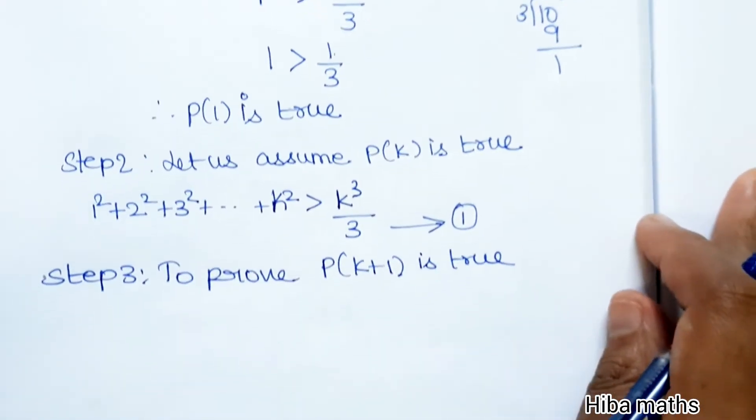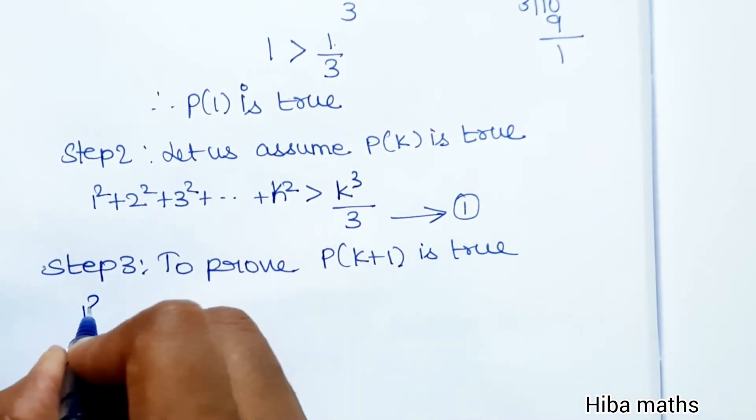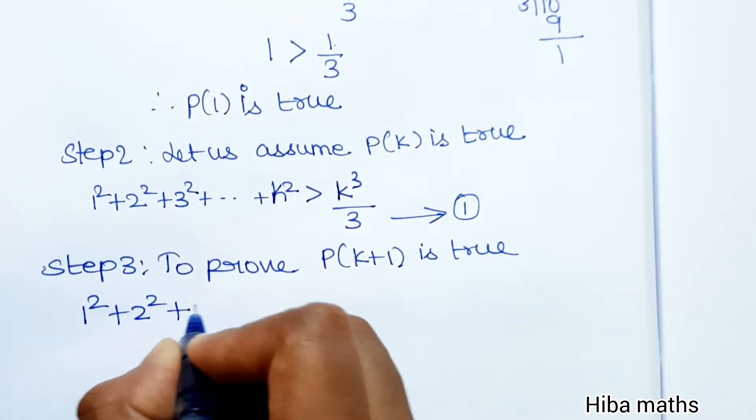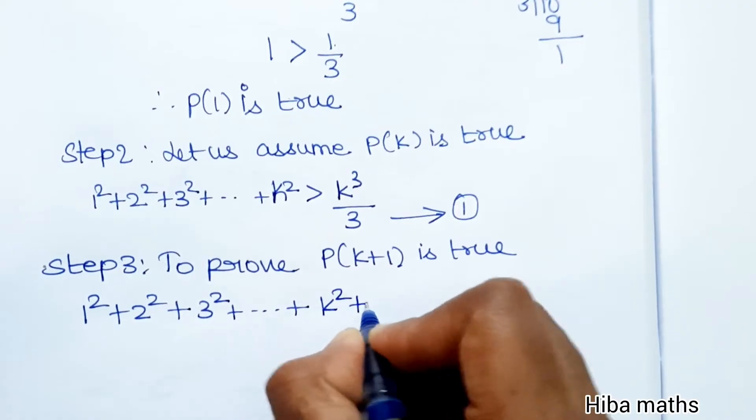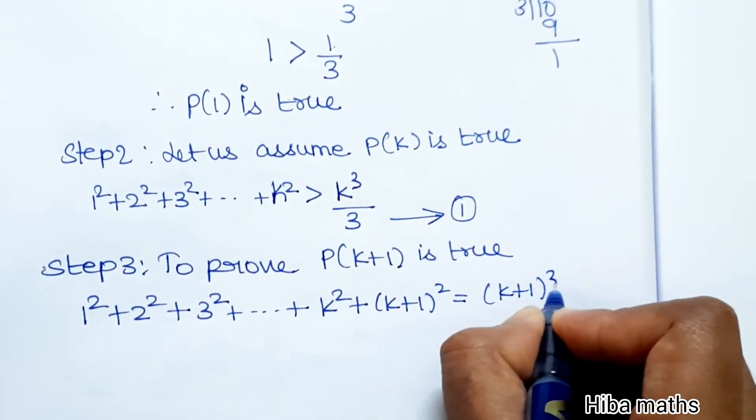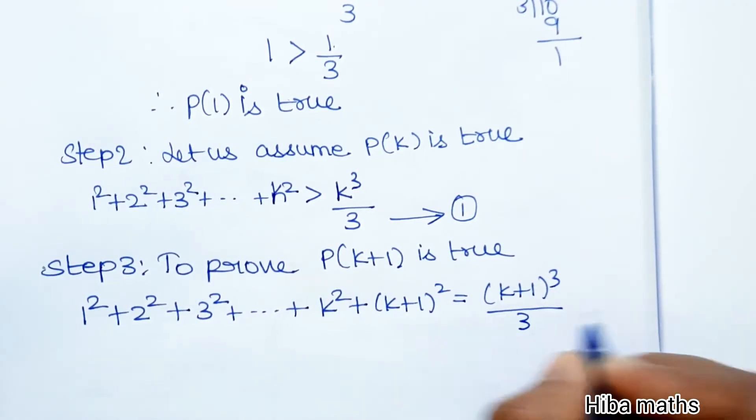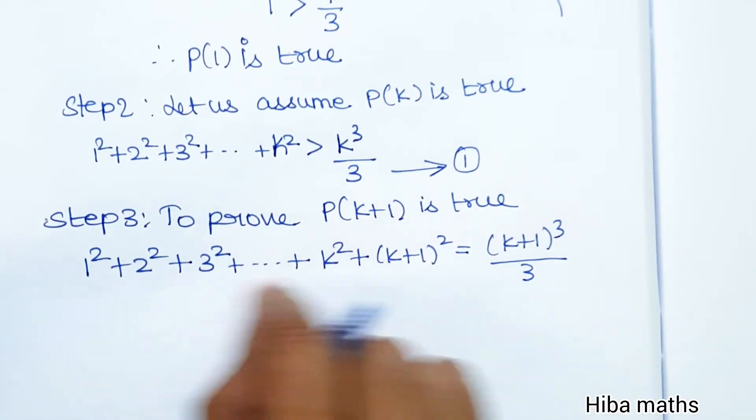P(k+1) is true. We will prove 1² + 2² + 3² + ... + k² + (k+1)² > (k+1)³/3. This is the proof we will show. Now we will prove the LHS.